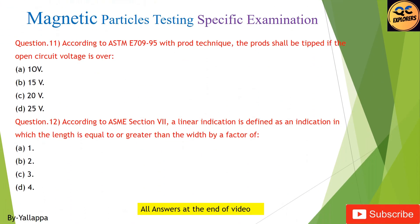Question 11: According to ASTM E709-95, with the prod technique, the prod shall be tipped if the open circuit voltage is over: (A) 10 V; (B) 15 V; (C) 20 V; (D) 25 V.